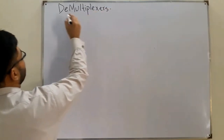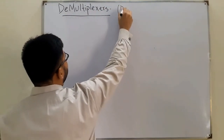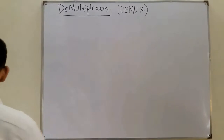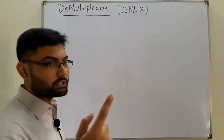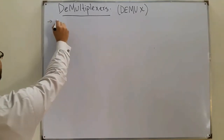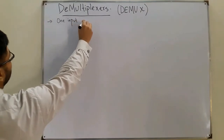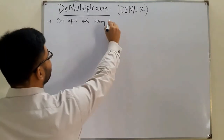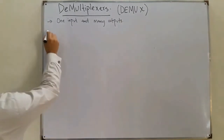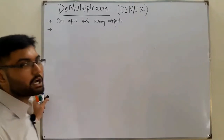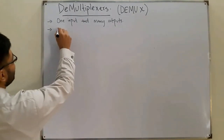In short, a demultiplexer is known as D-MUX, just as multiplexers were known as MUX. In a demultiplexer we have one input and many outputs — more than one. As the name suggests, the 'de' prefix means it does something opposite to a multiplexer.